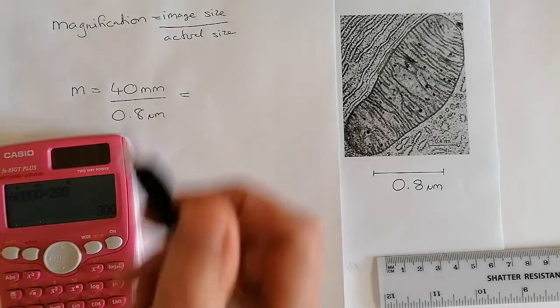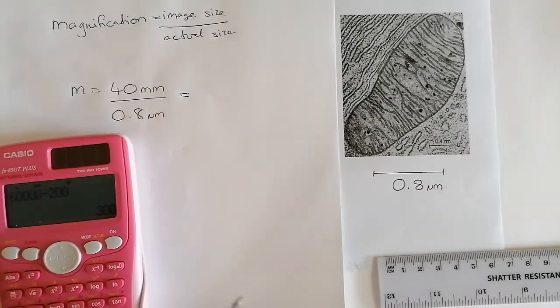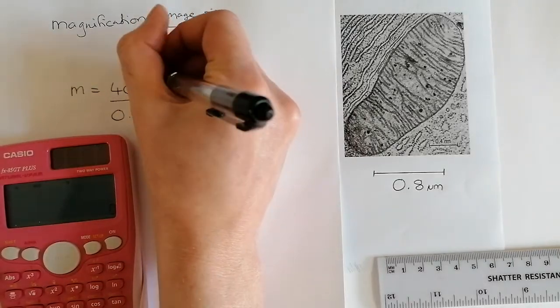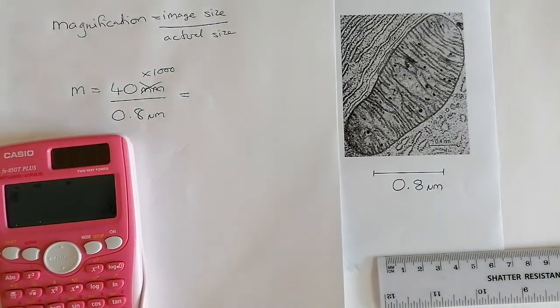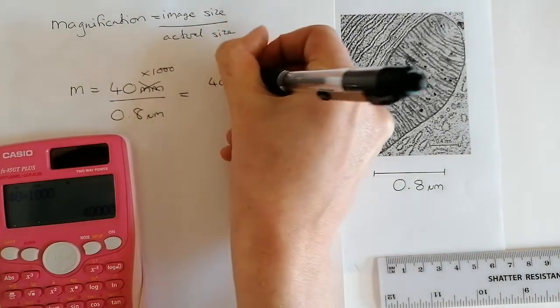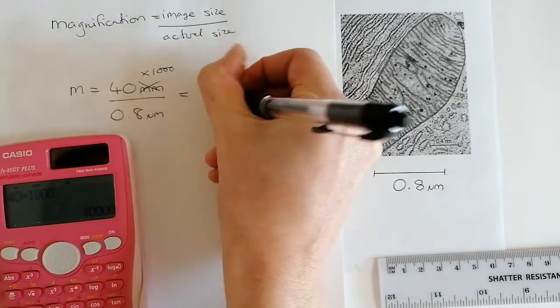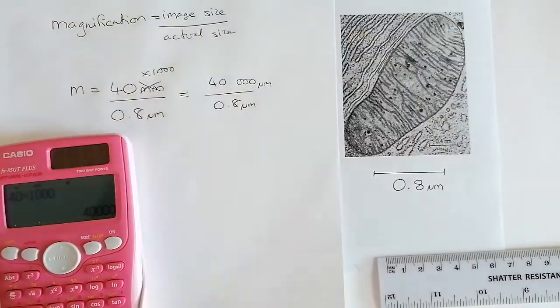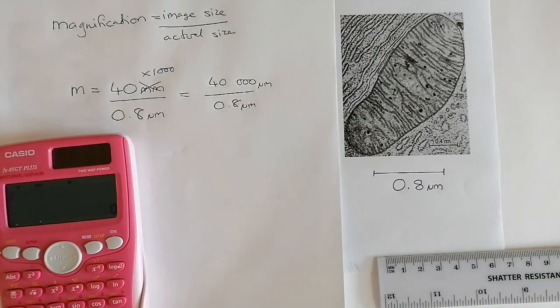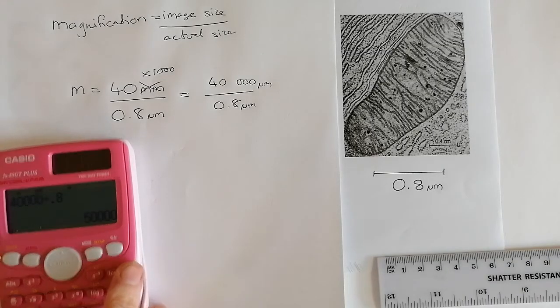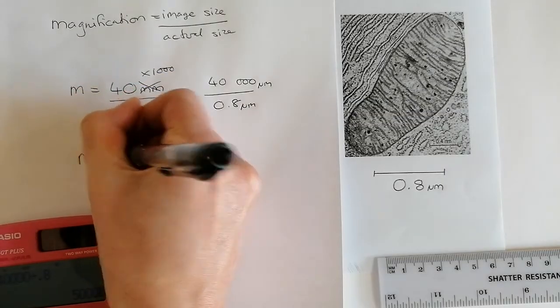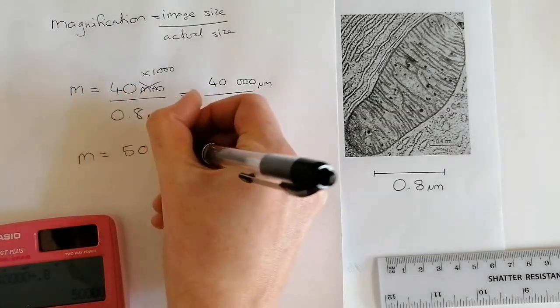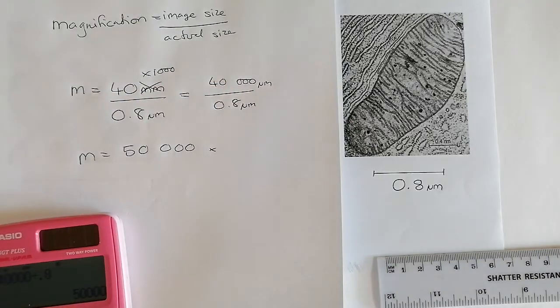So we need to change this millimeters into micrometers. So to do that, we have to be timed by 1,000. So 40 times 1,000 will give us 40,000 all over 0.8. And then that puts most of our numbers into micrometers. So we're now in the same unit. And we can just plug these numbers into our calculator.